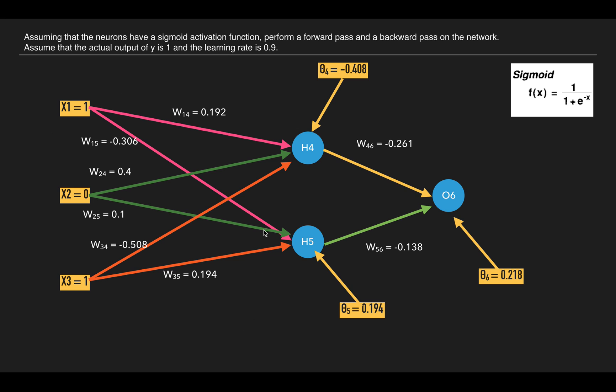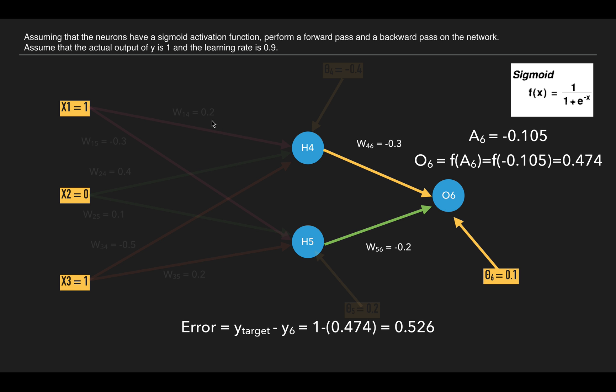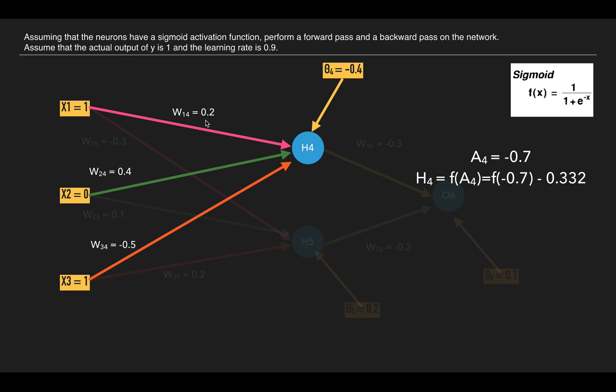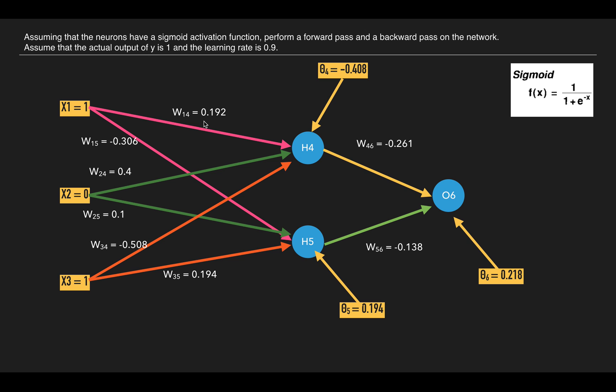So it would look like something like this—say for w14, 0.192. It was previously 0.2, as you can see. So the weights have been updated. You can calculate it on your own.